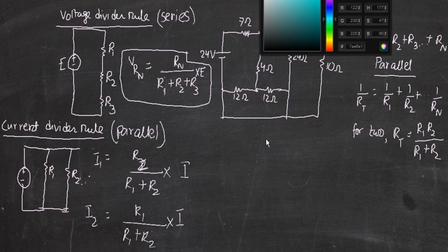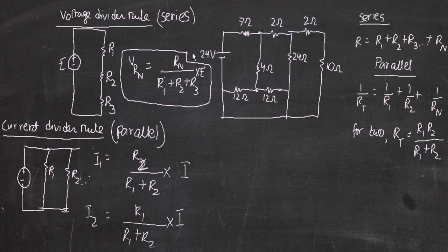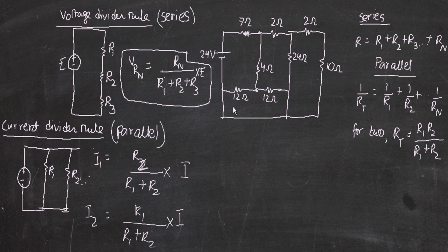Now let's look at an example of solving a series and parallel circuit. A series circuit is when there is just one common point between resistors, and a parallel circuit is when there are two common points. It can be hard to identify which resistors are in series and which are in parallel when there's a complicated circuit — for example, this one here.